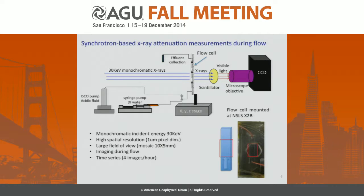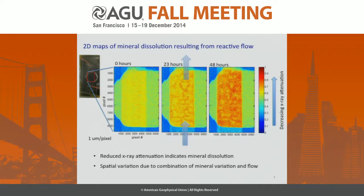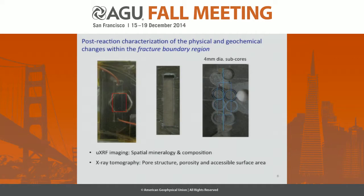In this case, we're looking at primarily calcite dissolution. Four images per hour give us really good resolution. Here is one way of looking at a 2D map of the results — we're looking at X-ray attenuation. As you get to the hotter colors, that is decreasing X-ray attenuation. After 23 and then 48 hours, you have this reduction in X-ray attenuation, meaning there's been mineral dissolution, and we see this spatially variable dissolution within the rock. We want to look at what's actually going on so that we can then calculate the actual dissolution rates.